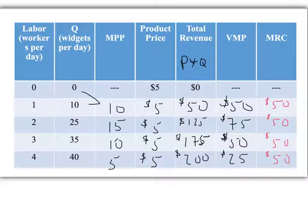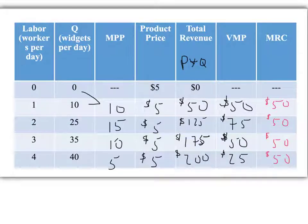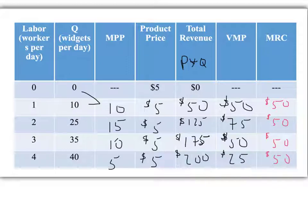The first worker yields $0 profit, the second yields $25 total profit. Would I hire the third worker? Yes — their value to the company is $50 and they cost $50, so you don't lose or gain anything. Would I hire the fourth worker? No — their value is $25 but they cost $50, so you'd lose $25 in marginal profit. The correct answer to how many workers you hire is three, because that's where it maximizes profit and where VMP equals MRC.